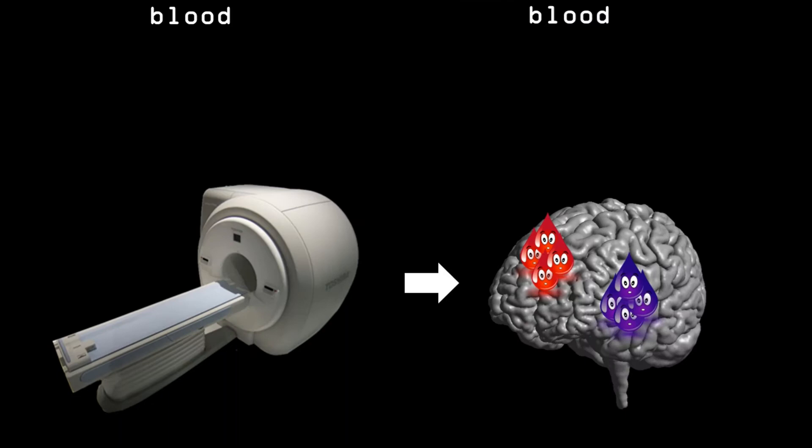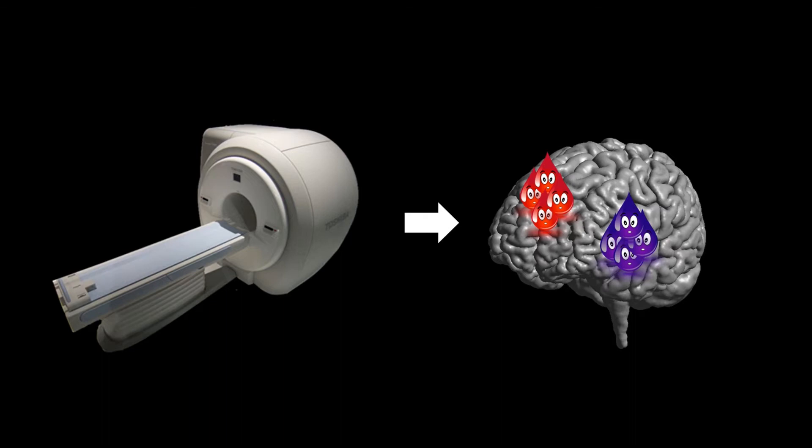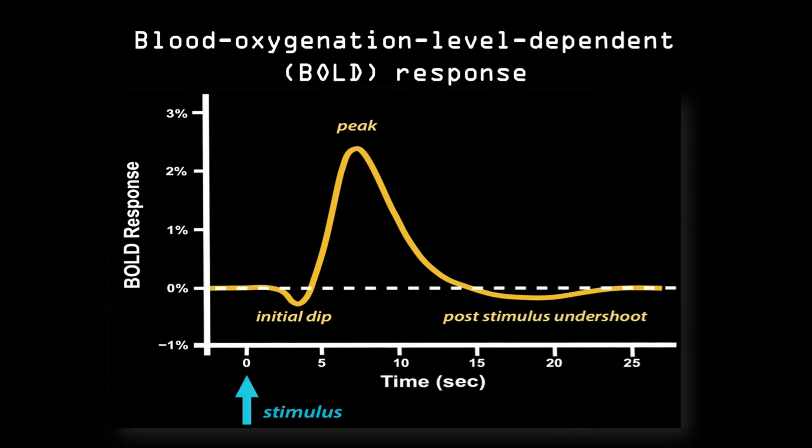It is this replenishing of oxygen after neurons were active that can be measured with fMRI. And therefore, this signal is referred to as the blood oxygenation level-dependent response, or in short, BOLD response.